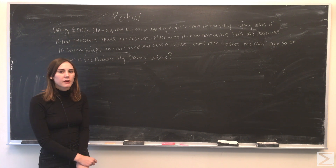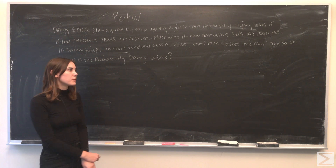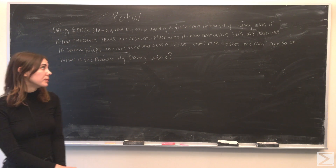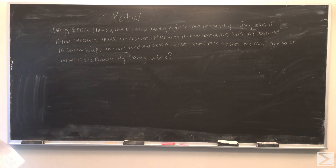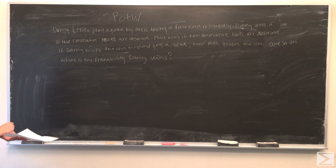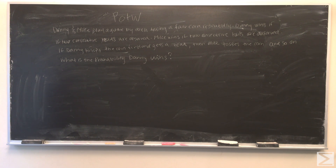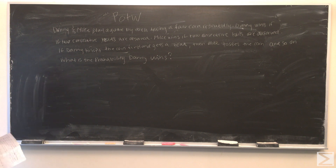Hi and welcome to the World Wide Center of Maths Problem of the Week. This week we have a probability problem. Danny and Mike play a game by each tossing a fair coin repeatedly. Danny wins if two consecutive heads are observed. Mike wins if two consecutive tails are observed. If Danny tosses the coin first and gets a head, then Mike tosses the coin and so forth — what is the probability that Danny wins?